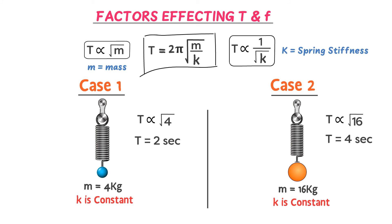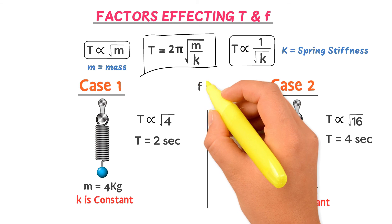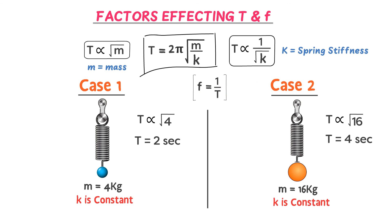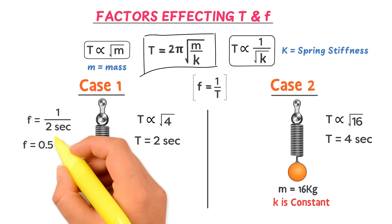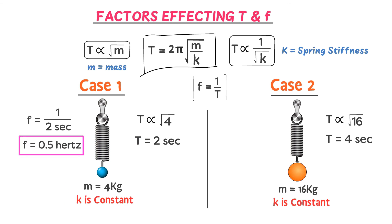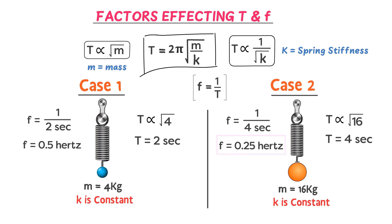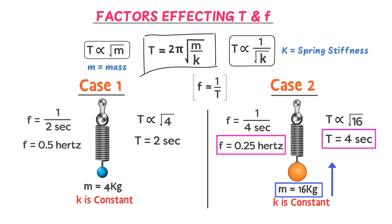For the frequency: in Case 1, f = 1/2 s = 0.5 Hz; in Case 2, f = 1/4 s = 0.25 Hz. Therefore, if we increase the size of the mass attached to the spring, its time period increases but its frequency decreases, because there is an inverse relationship between time period and frequency.